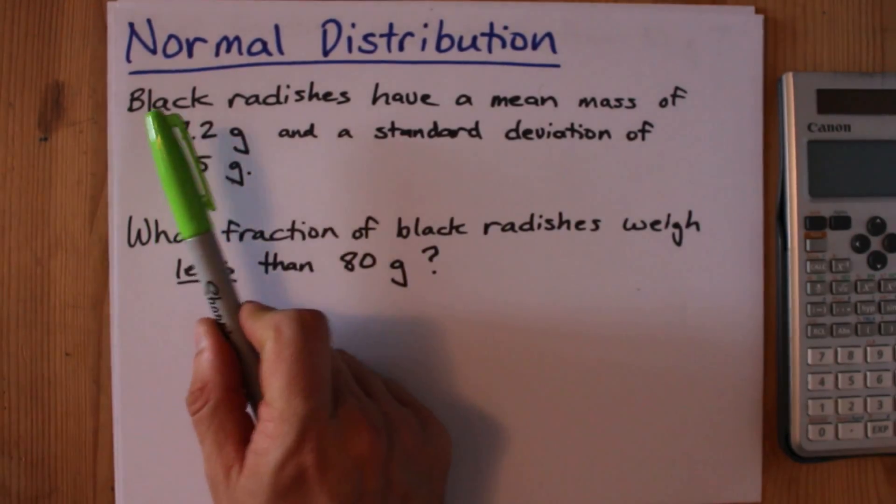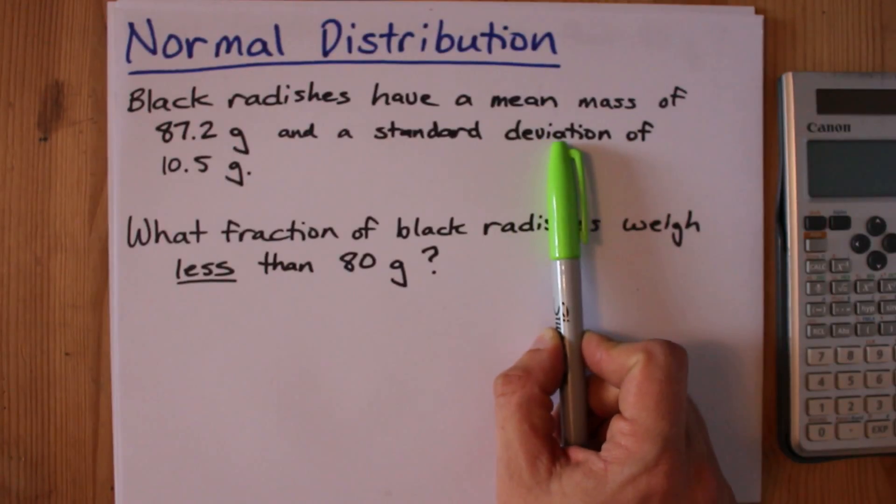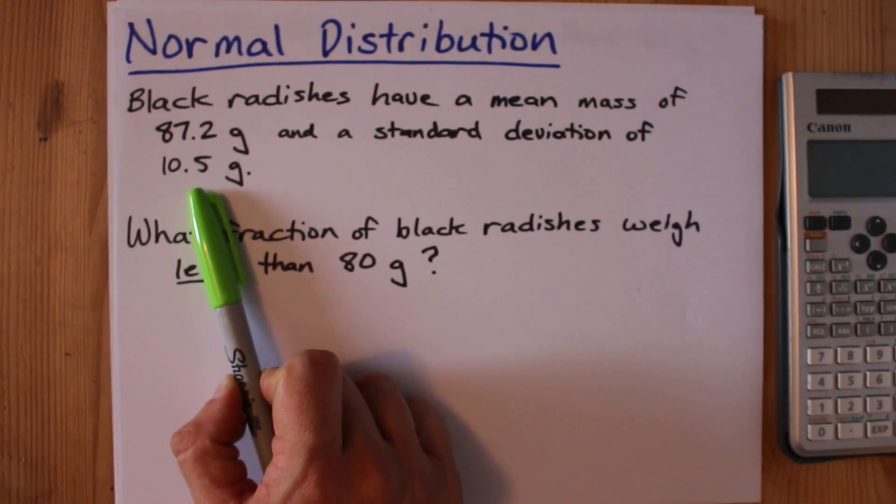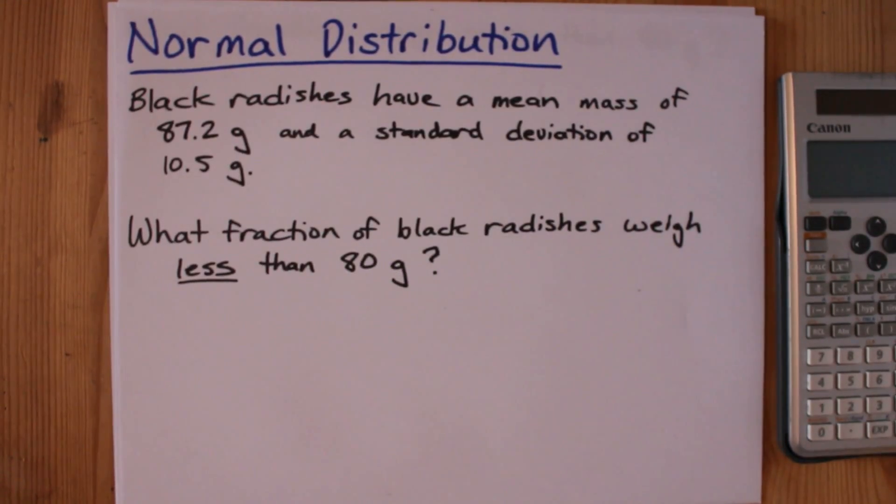I've got a question here about black radishes that have a mean mass of 87.2 grams and a standard deviation of 10.5 grams. We're asked for the fraction of black radishes that weigh less than 80 grams.